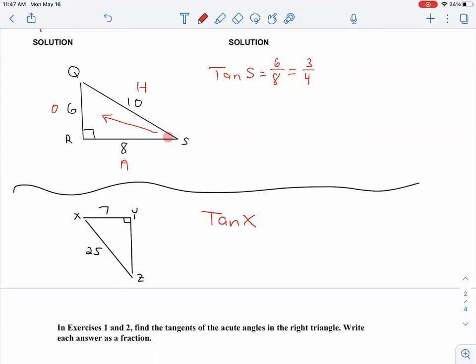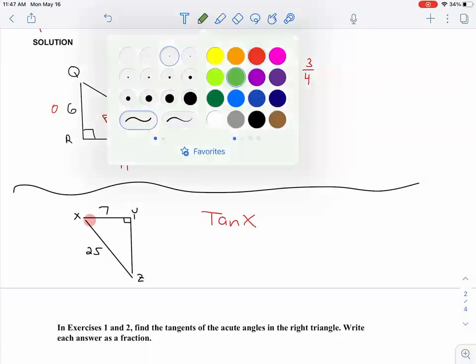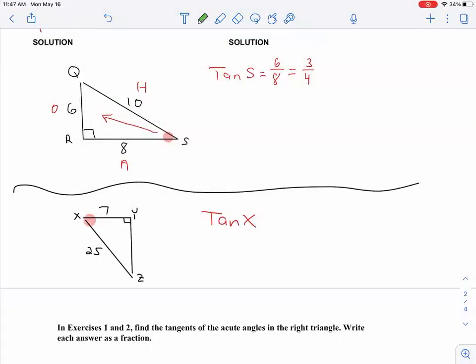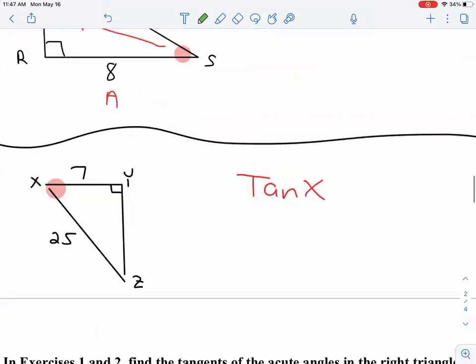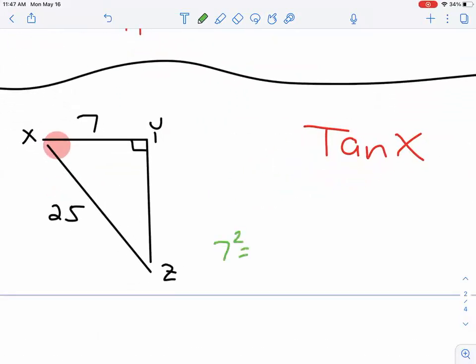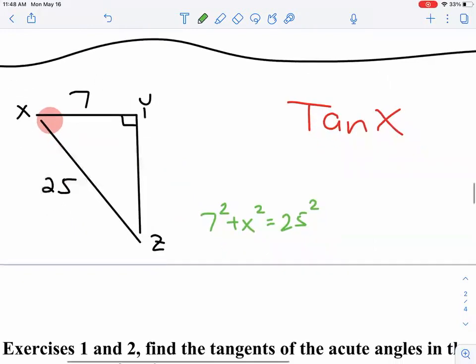So what side are we missing the hypotenuse? No. But in relation to X, we're missing the opposite, right? So what we have to do for this problem is we got to do a little Pythagorean theorem first. So this is harder when we're missing either the opposite or the adjacent. I have to do 7 squared plus X squared equals 25 squared. 7 squared plus X squared equals 25 squared. That's going to help me find that missing side there. So 7 squared is 49.